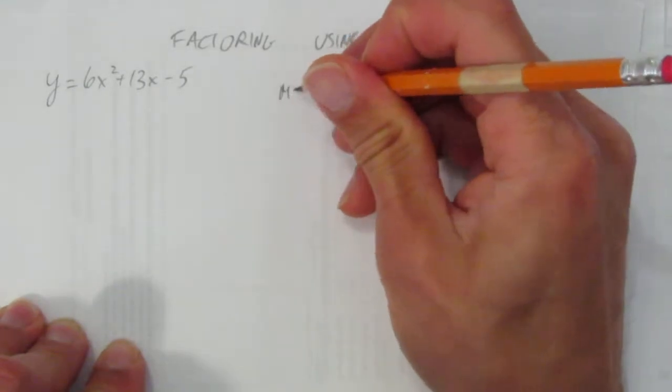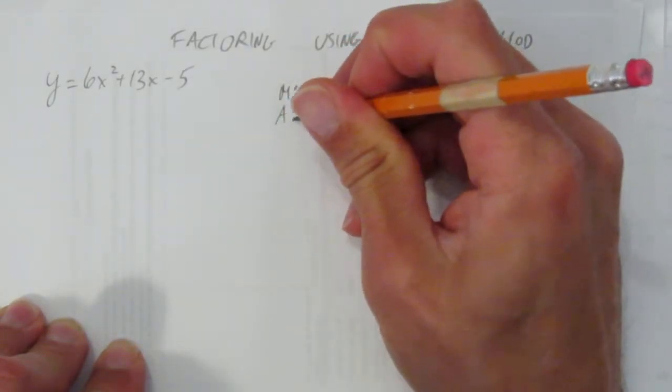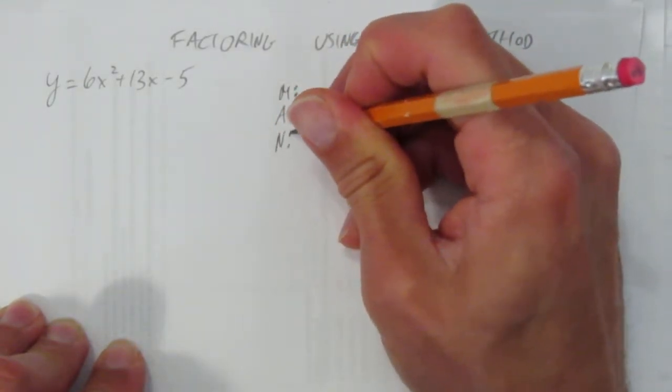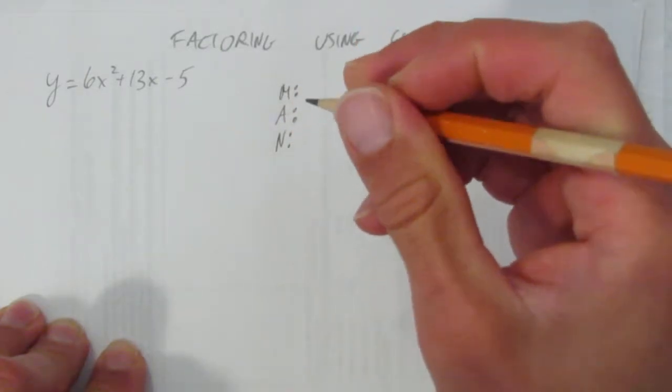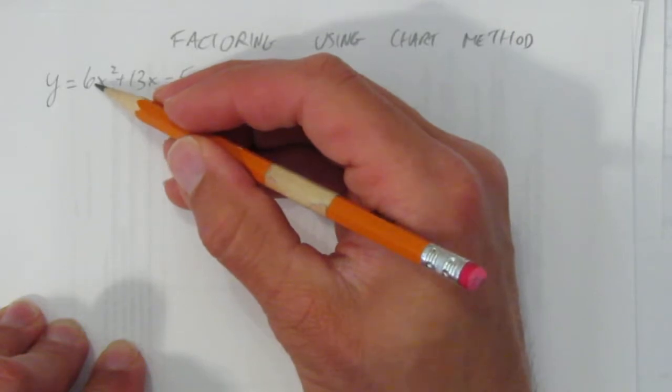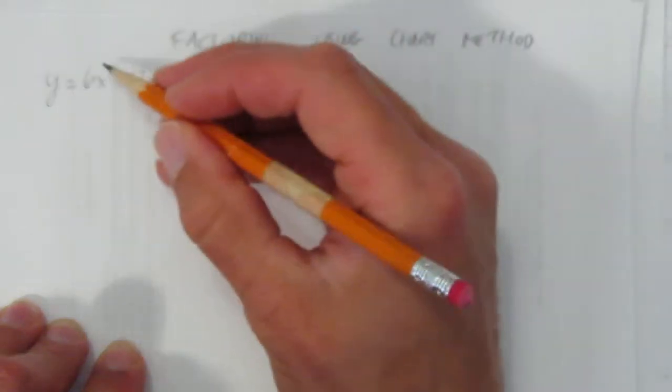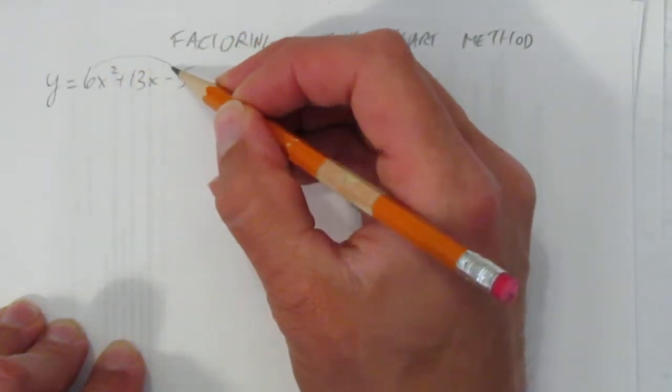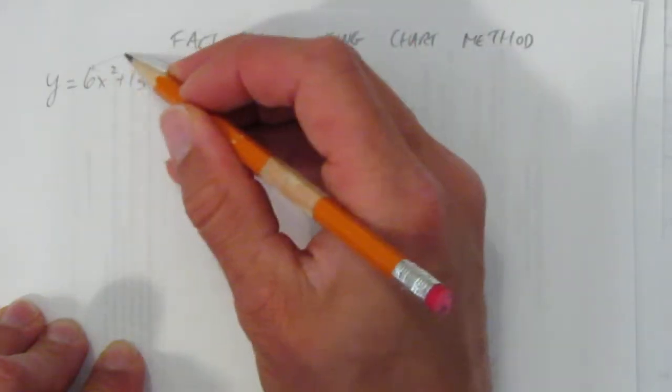We start by writing down the man, except this time here's where a lot of people make mistakes. We're not trying to multiply to this term because there's a coefficient on the x squared. This m value is going to come from the 6 times the negative 5, or a times c.